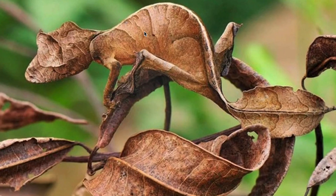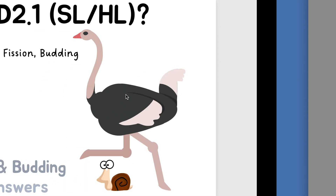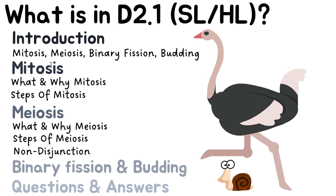In this video we're going to be talking about everything you need to know about cell and nuclear division. We've got to cover mitosis, meiosis, binary fission, and budding. But the bulk of the video is going to focus on mitosis and meiosis. First, let's do a brief introduction about these four things just so you get a nice overview before we really dive into the nitty-gritty details.